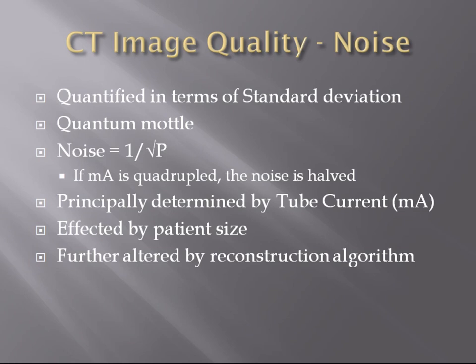Noise is quantified in terms of standard deviation, and we perceive it as quantum mottle — little random variations in the perceived attenuation that you'll see in your image. Noise is related to the dose of your CT technique; specifically, it is inversely related to the MA. The MA is an expression of the number of photons that are exposed to your patient and incident upon the detector. So if we quadruple the dose in terms of MA, the actual noise is cut in half.